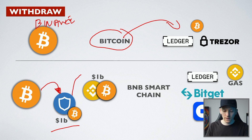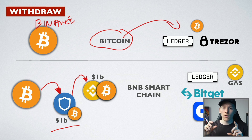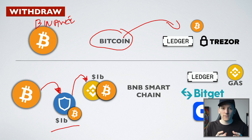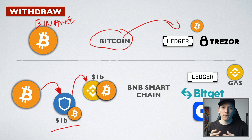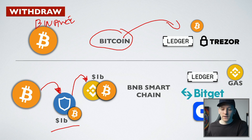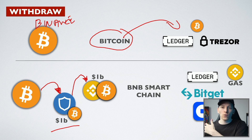That billion dollars in value goes over to the BNB Smart Chain, so you have a billion dollars of Bitcoin on the BNB Smart Chain. The mechanism is: if you have Bitcoin on the BNB Smart Chain, you can withdraw it and reclaim your Bitcoin on the Bitcoin blockchain. It's just value on a different chain — it's a kind of IOU, a wrapped or pegged token.